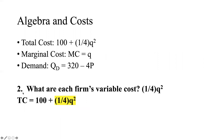Now we're going to be asked: what are each firm's variable costs? The correct answer is one-fourth Q squared. The reason is that variable costs change with the quantity produced. The fixed costs are constant regardless of quantity, while the variable costs change with the quantity produced by the firm.